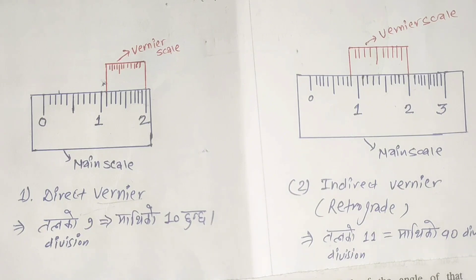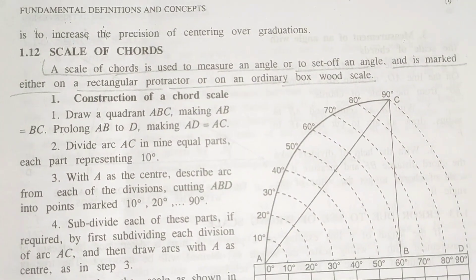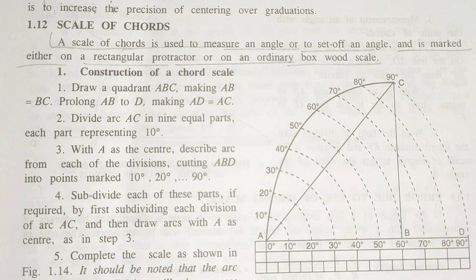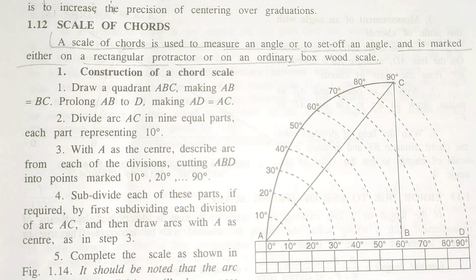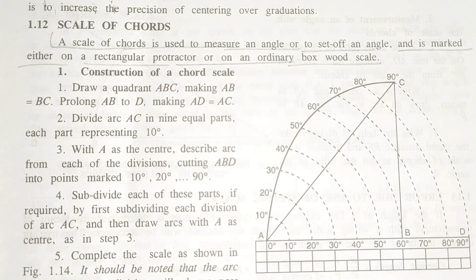Now we will show the Scale of Chord. The Scale of Chord is divided into two halves. It is used to measure angles — similar to a protractor. A protractor is used to measure an angle or set an angle. The main work is to measure or set angles. The Scale of Chord is used to measure angular distances along a line — it is the most important tool for angular measurement.